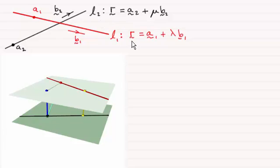I've written down their vector parametric forms where A1 and A2 are fixed known points on the line and B1, B2 are vectors parallel in the direction of the lines.